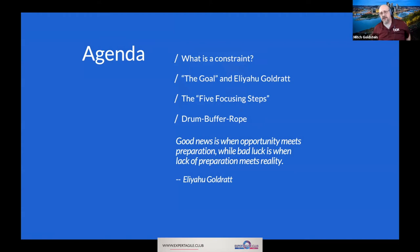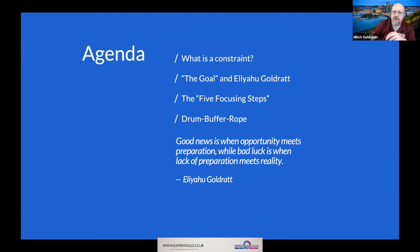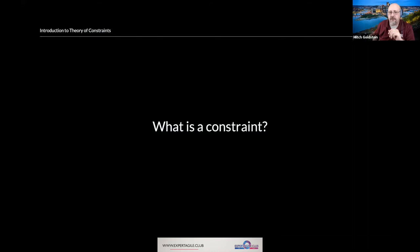Here's our agenda: first we'll talk about what a constraint is, then we'll discuss the novel 'The Goal' and Dr. Eliyahu Goldratt, who authored it and is the author of the Theory of Constraints. We'll talk about the five focusing steps, the drum buffer rope paradigm, and go through real-life concrete examples of how the Theory of Constraints is used. Then we'll jump into Q&A.